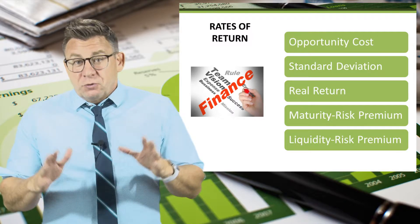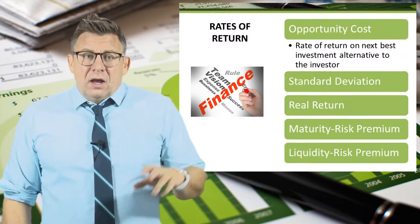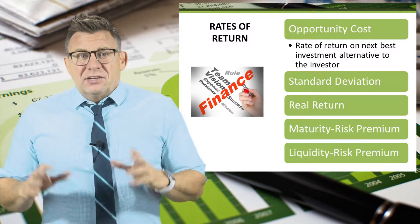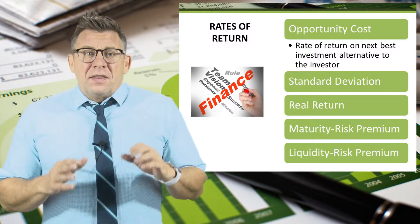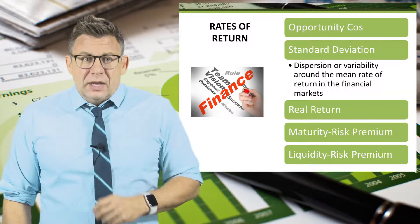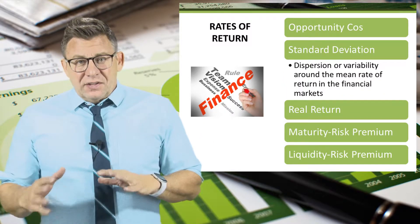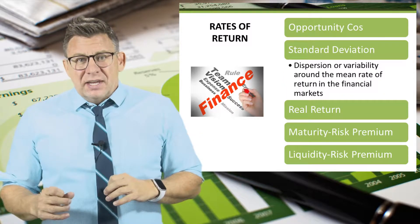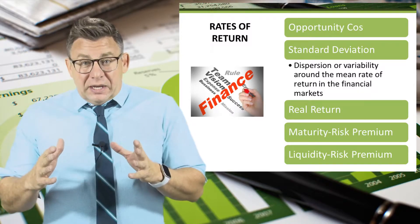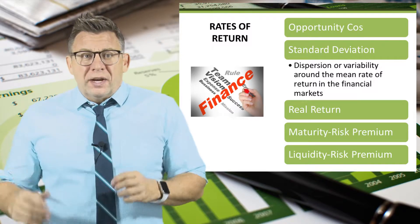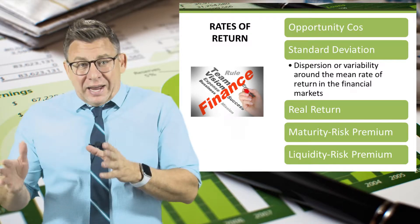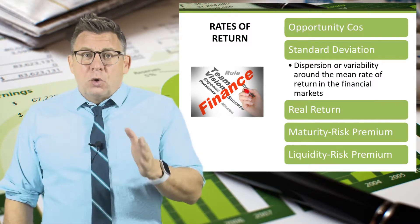So let's learn some new terms related to returns. Opportunity cost, in this context, is the rate of return on the next best investment alternative to the investor. Standard deviation in this context is the dispersion or variability around the mean or average rate of return in the financial markets. The higher the standard deviation, the more risk.